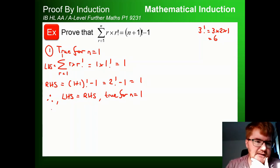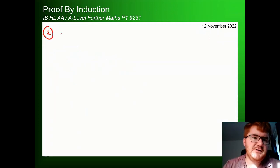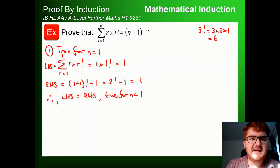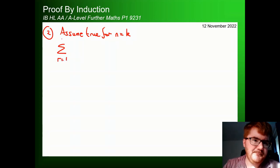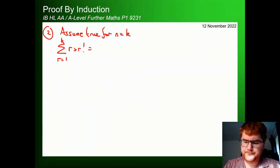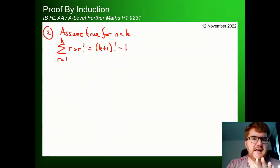We always have to do that base step. Now for the tricky part. We assume it's true for n=k, so the sum from r=1 to k of r·r! = (k+1)!−1. We're assuming that's true, and now we need to consider the sum from r=1 to k+1 of r·r!.